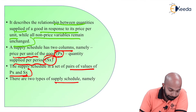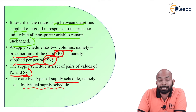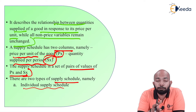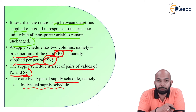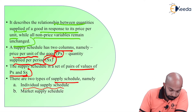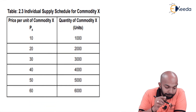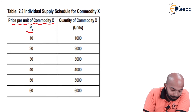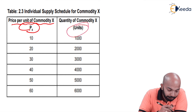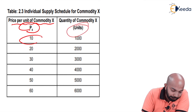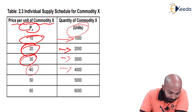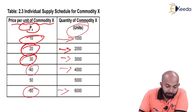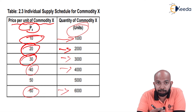There are two types of supply schedule. The first is the individual supply schedule, where the supply of specific producers is taken into consideration. The second is the market supply schedule, which is formed when all individual supply schedules are merged together. A table shows the price per unit of commodity PX alongside the quantity supplied SX: at 10 rupees, 1000 units; at 20, 2000; at 30, 3000; at 40, 4000; and at 60, 6000 units.